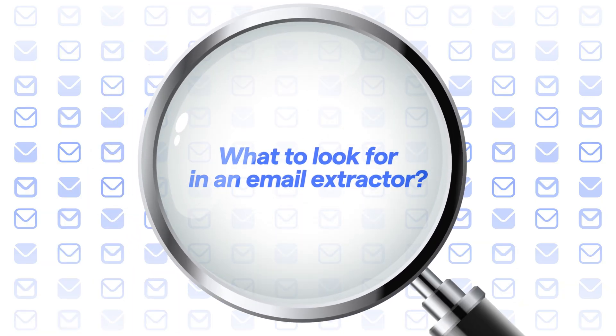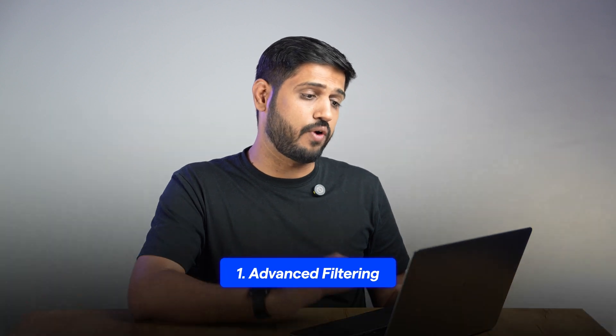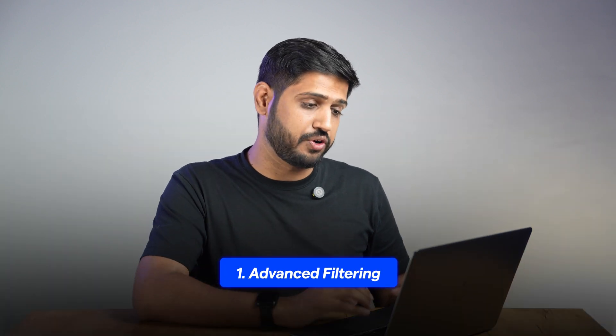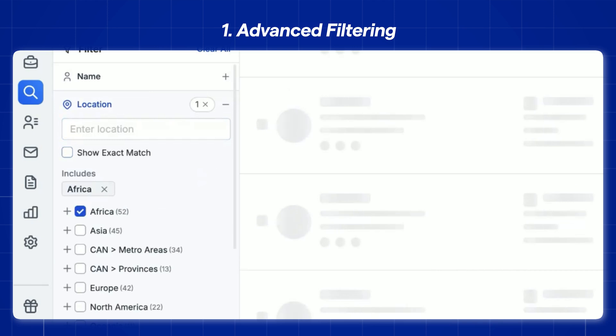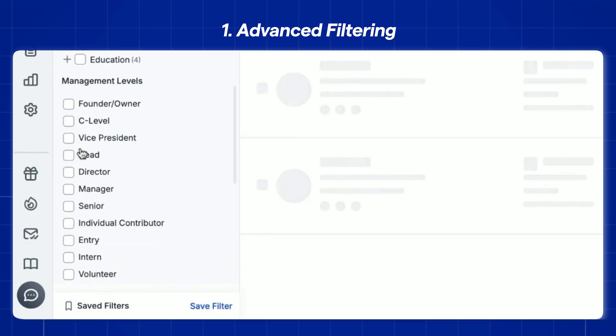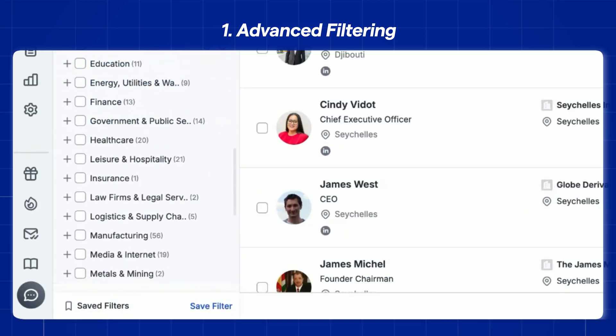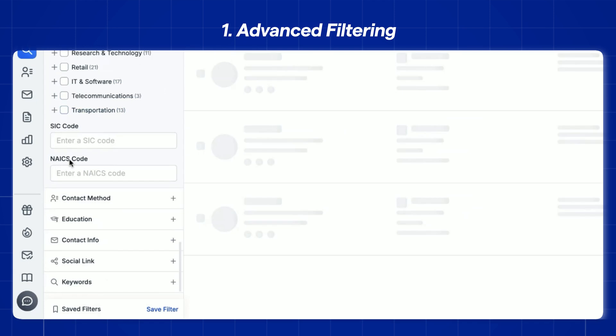But before we get into the list, let's clear something: what actually makes a good cold email extractor? If you're going to invest in a tool, make sure it has these features. The first and most important thing is advanced filtering. You don't need just any email — you need the right one. A solid tool lets you filter by job title, industry, location, and company size, so you are reaching out to the right decision makers.